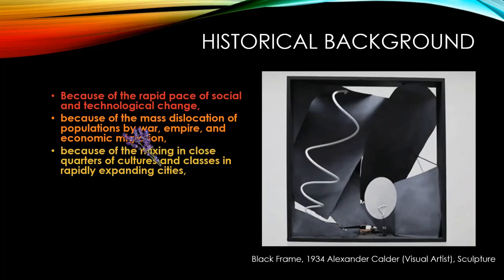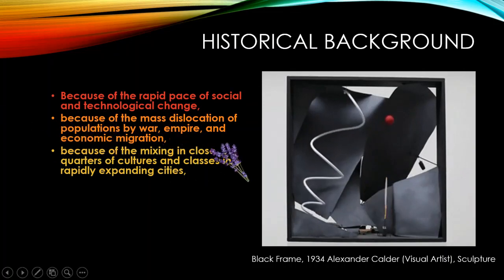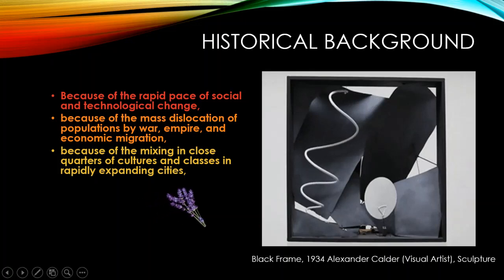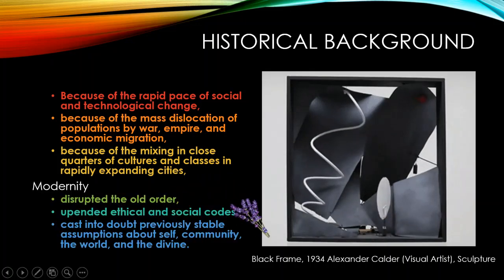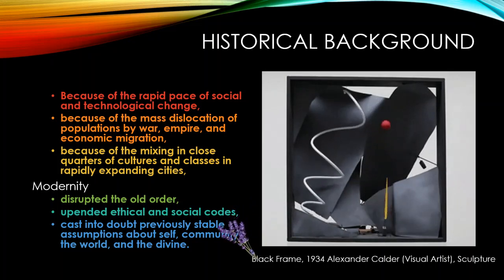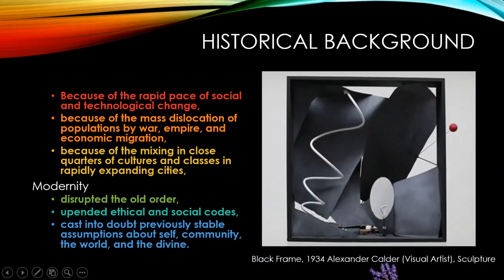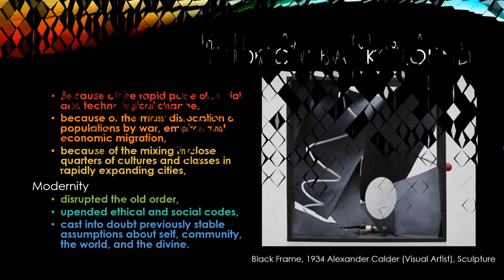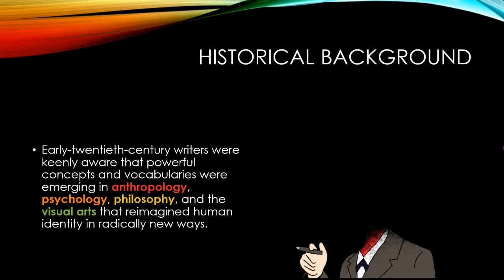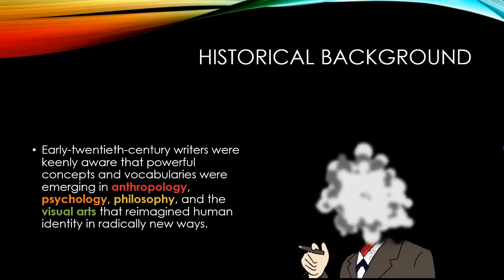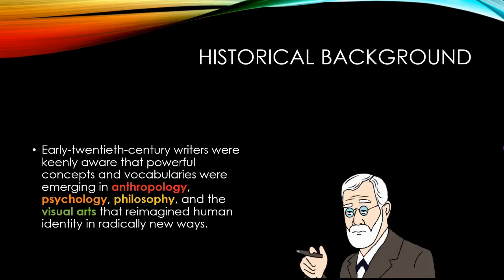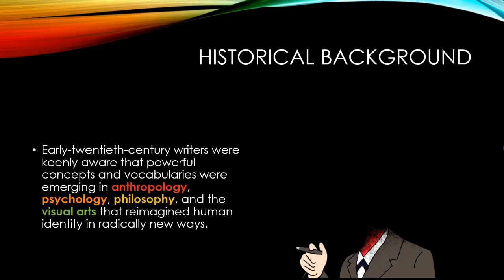Because of the rapid pace of social and technological change, the mass dislocation of populations by war, empire, and economic migration, and the mixing of cultures and classes in rapidly expanding cities, modernity disrupted older ethical and social codes and cast doubt on previously stable assumptions about the self, community, the world, and the divine. This is called the condition of modernism. There were also major changes in the structure of thinking and the structure of feeling — to use Raymond Williams's terminology — with new sciences and new philosophies of life at hand.